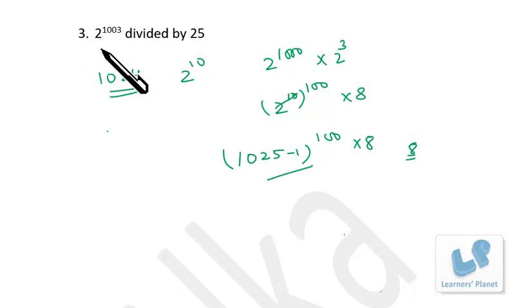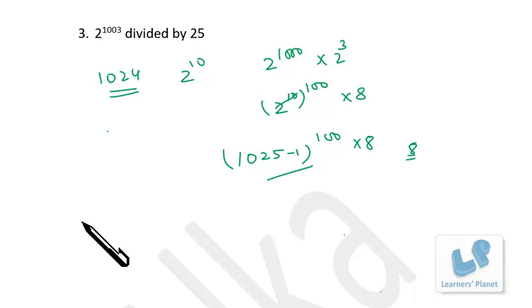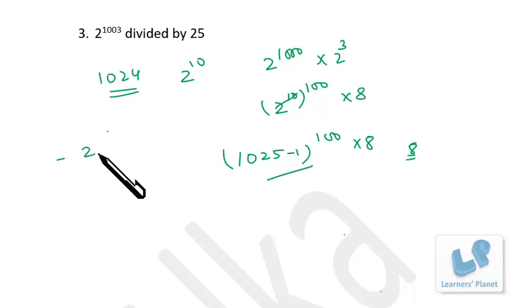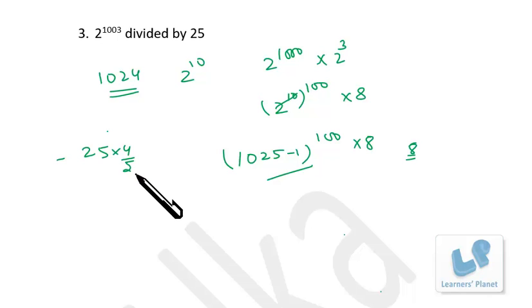I solved this problem earlier: 2 raised to 1003 divided by 25, what is the remainder? Now I will solve the same problem using Euler's theorem. We have to find the Euler number for 25. So 25 into 4 by 5, that is 1 minus 1 by 5. Since 5 is the only factor of 25, the Euler number is 20.